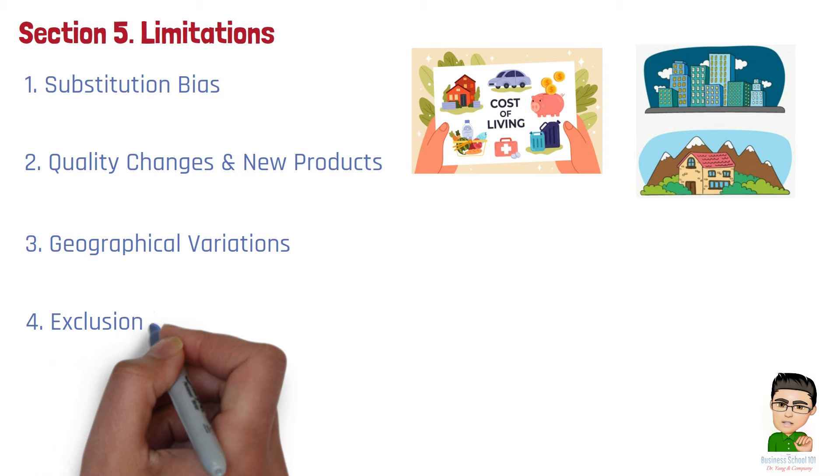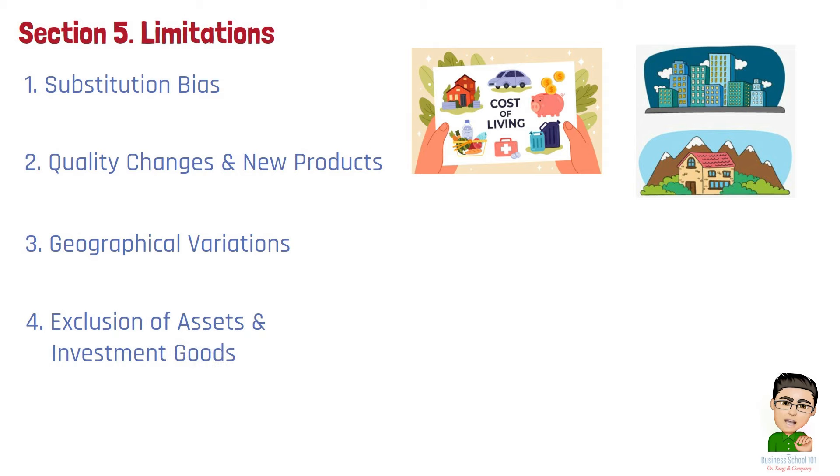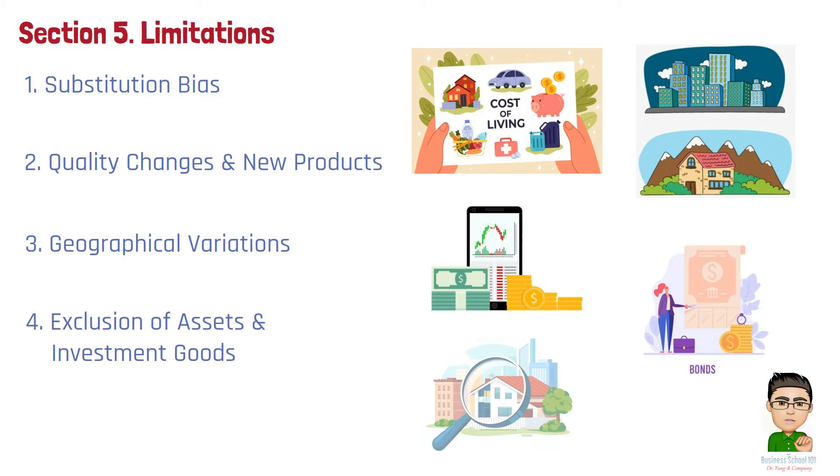Number 4. Exclusion of assets and investment goods. The CPI does not include the prices of assets such as stocks, bonds, and real estate, which can be significant components of a household's wealth and spending.